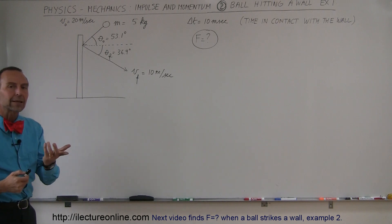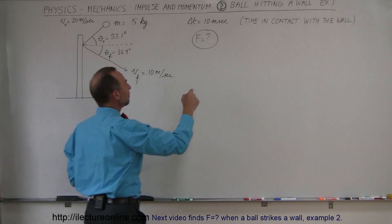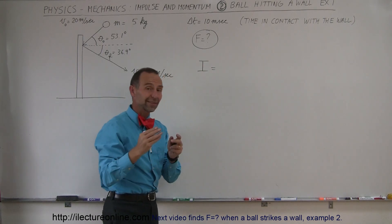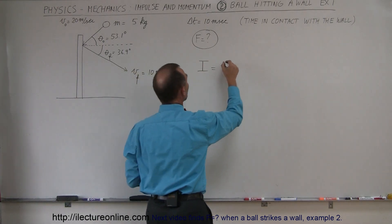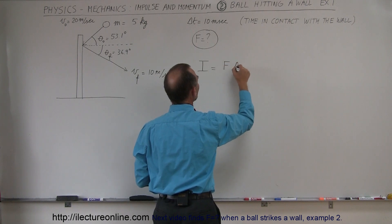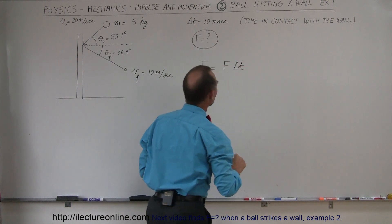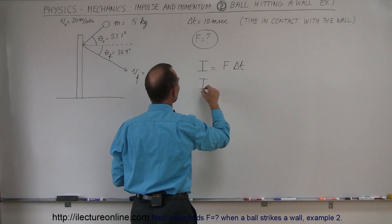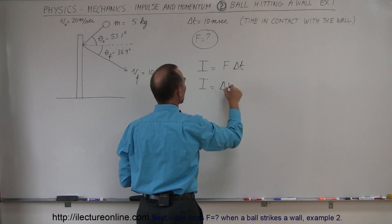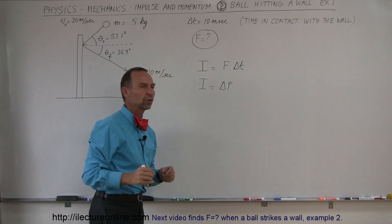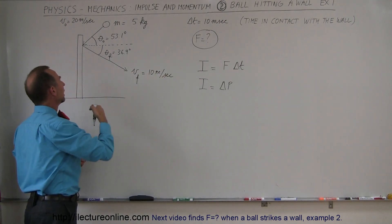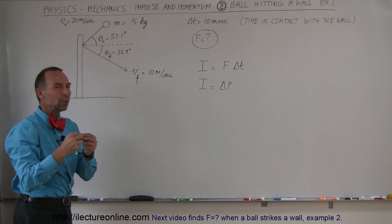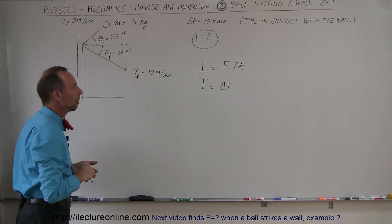First, let's think about the concept of impulse. Impulse can be defined as the force between the two objects — in this case the ball and the wall — times the time of contact, delta t. Impulse can also be defined as the change in the momentum of an object. So if the ball experiences an impulse by hitting the wall, that will cause a change in momentum of that ball.